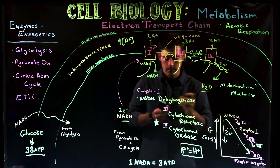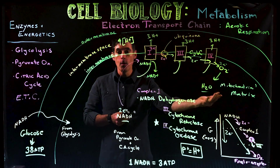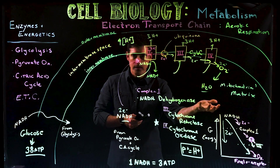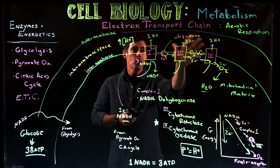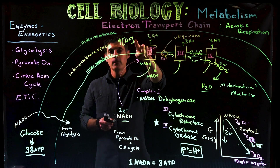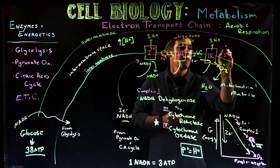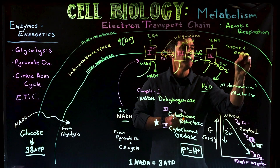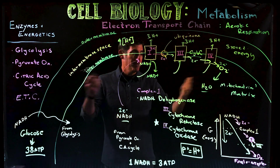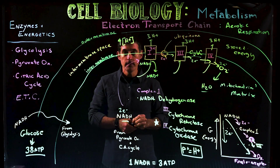The two electrons go to oxygen, which picks up some hydrogen ions and forms a water molecule. What we want to focus on is the intermembrane space: we are increasing the hydrogen ion concentration there, and that concentration gradient is stored energy. That stored energy is what will be used to make ATP. But this is the end of the electron transport chain — no ATP is made during the electron transport chain itself.